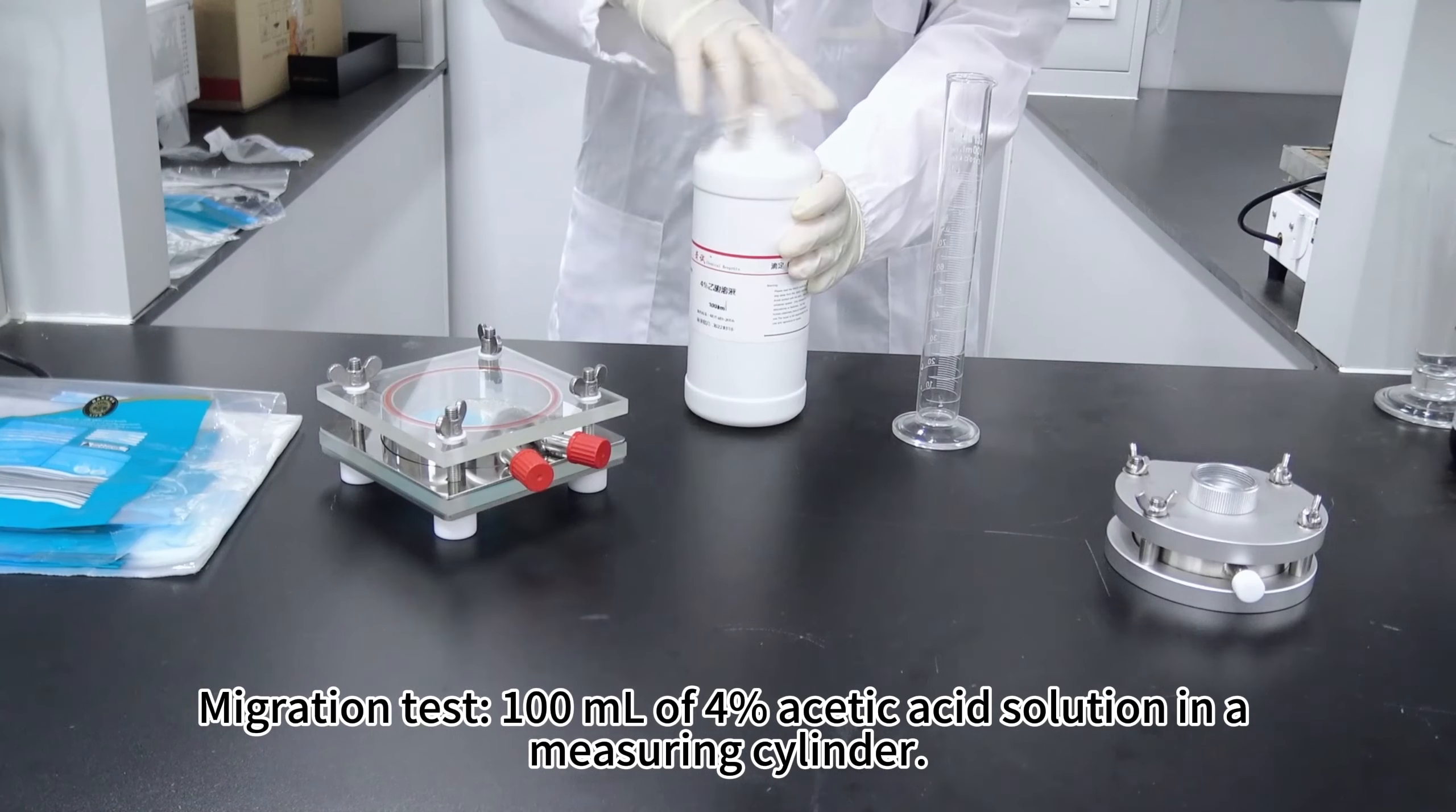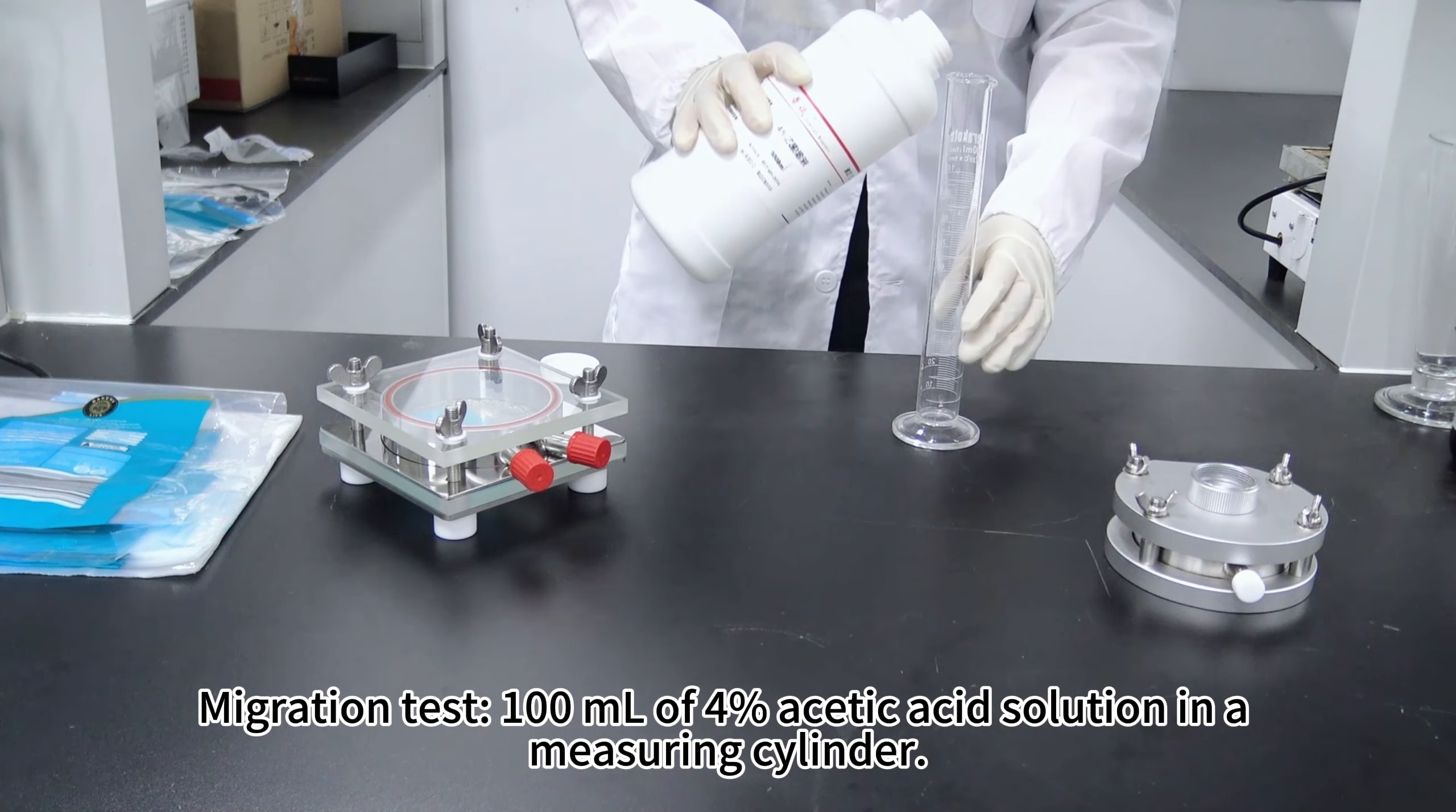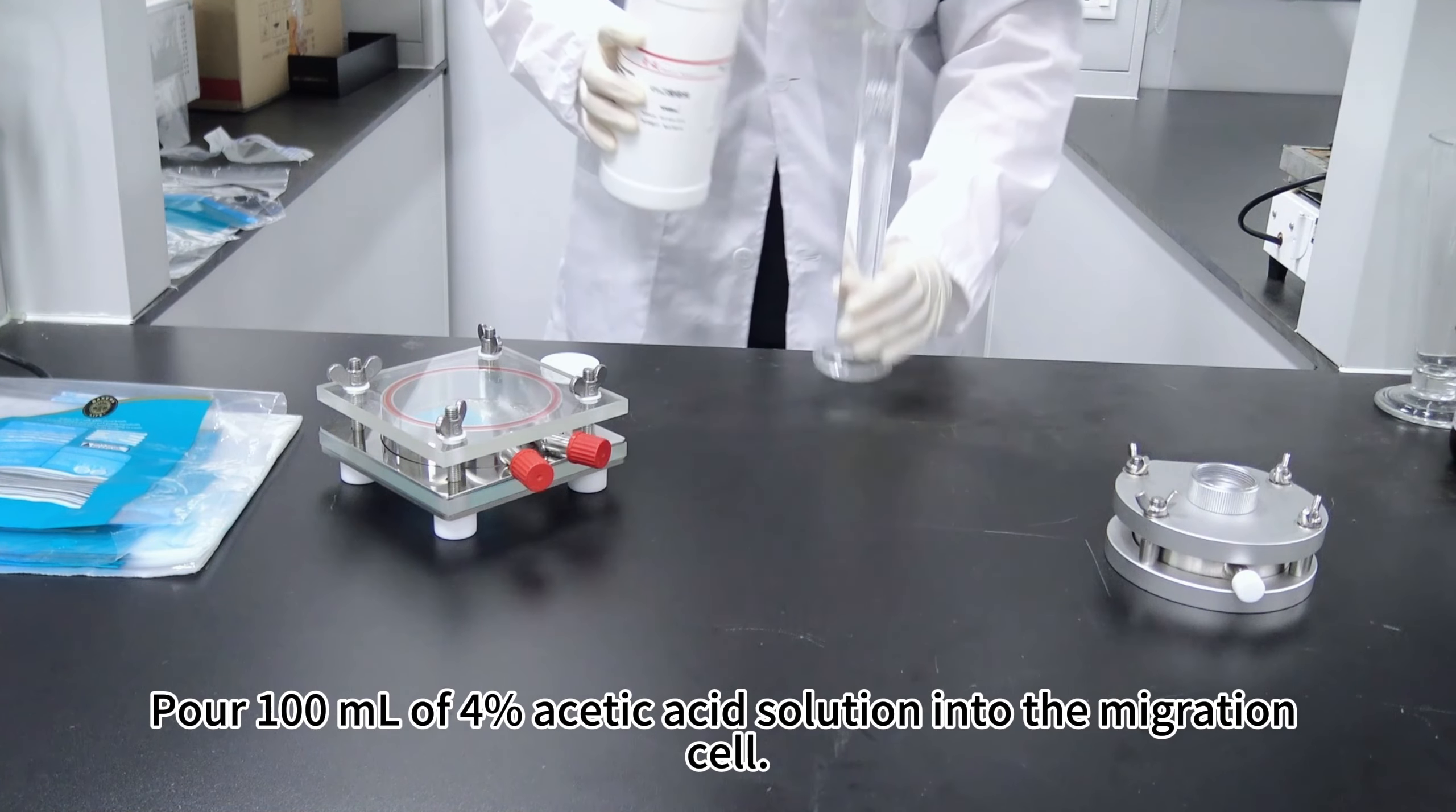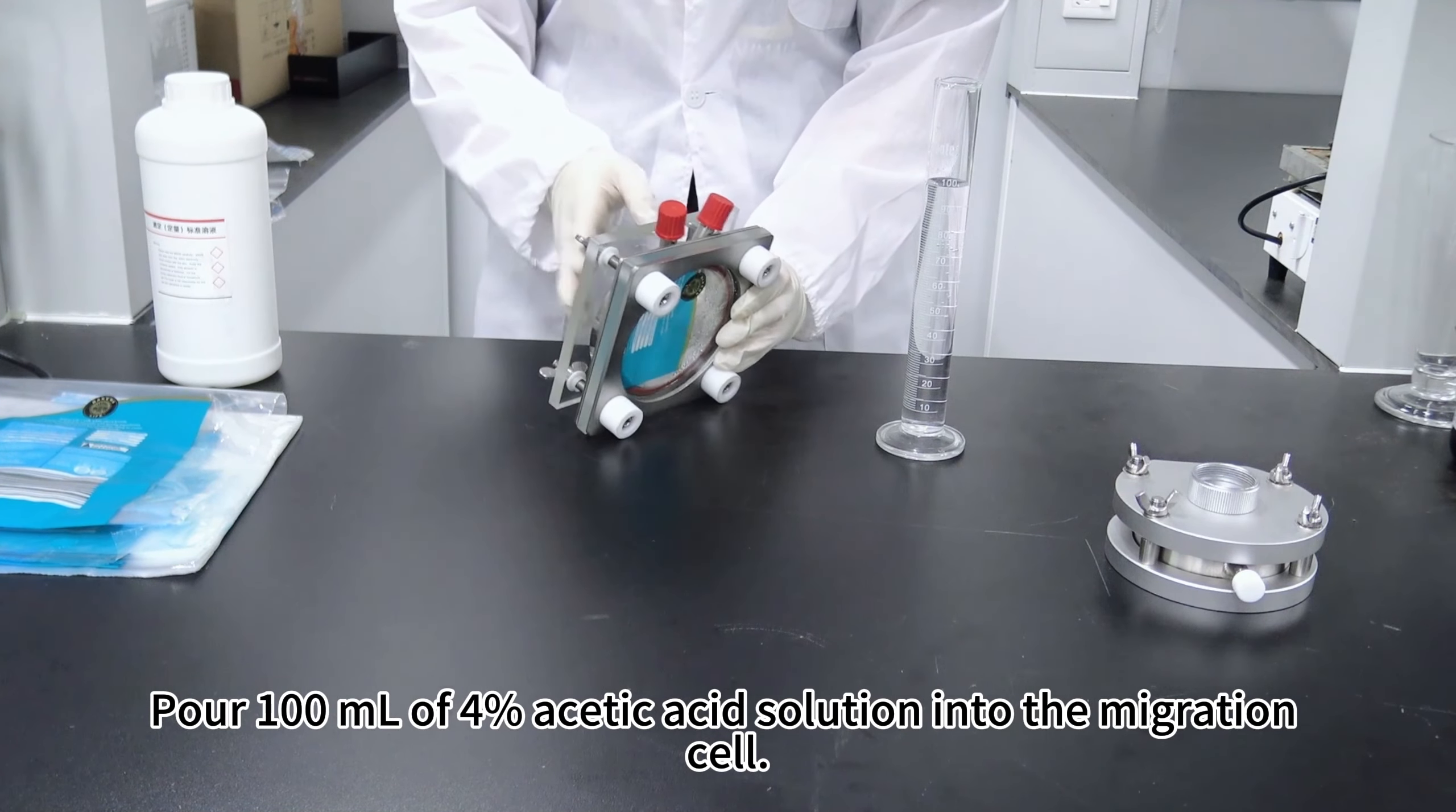Migration test: measure 100 milliliters of 4% acetic acid solution in a measuring cylinder. Pour 100 milliliters of 4% acetic acid solution into the migration cell.